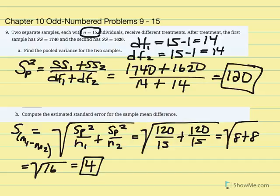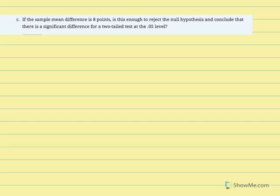Given those values, we proceed to part C, which asks us to calculate our t statistic and draw conclusions regarding the null. Part C says: if the sample mean difference is equal to 8 points, is this enough to reject the null hypothesis and conclude there's a significant difference for a two-tailed test at the 0.05 level? We're conducting a t-test for independent sample means — two different samples were exposed to two different treatments, and we want to determine if the difference is large enough to conclude it's due to treatment and not sampling error.